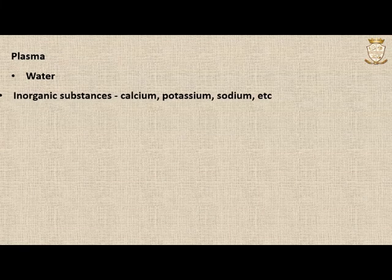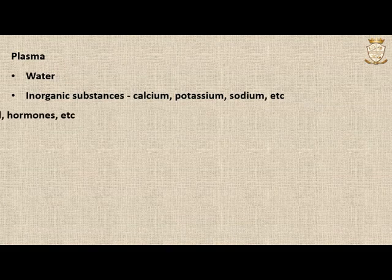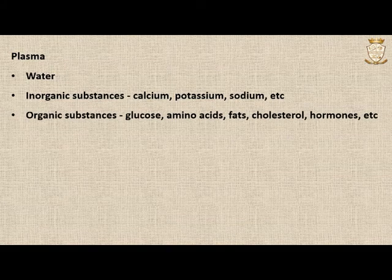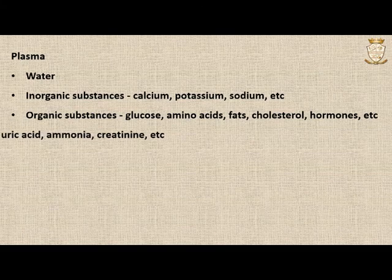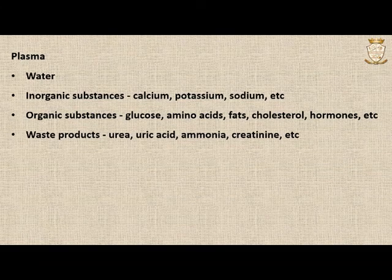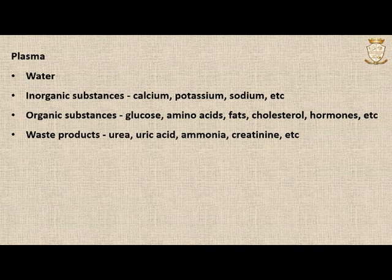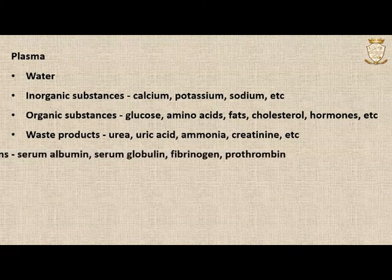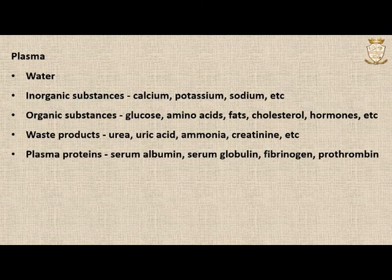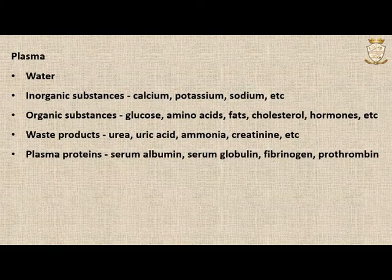Blood plasma contains mainly water, along with several suspended molecules. Inorganic substances include calcium, potassium, sodium, etc. Organic molecules include glucose, amino acids, fats, cholesterol, and hormones. The plasma also contains various waste products collected from tissues such as urea, uric acid, ammonia, and creatinine. Various plasma proteins are also present, including serum albumin, serum globulin, fibrinogen, and prothrombin.